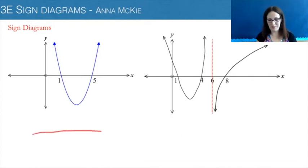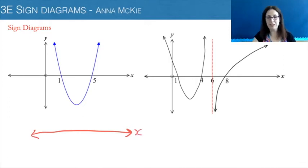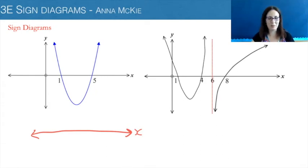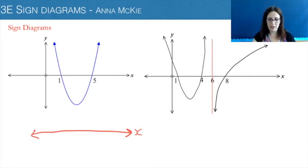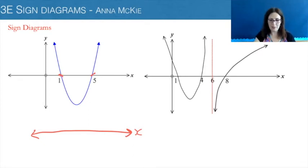Using a ruler every time you draw this — not like my freehand style — the sign diagram actually represents the x-axis at this point in time in year 11 level. When we do calculus in the future, we'll go into more detail. So it's a rough description of where the graph, the curved line, is in relation to the x-axis. We're looking at the points where it crosses the x-axis, which are the x-intercepts. They are the numbers that you put on your sign diagram.